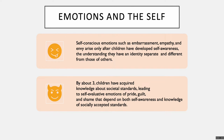Different emotions develop as the child grows in knowledge and becomes self-aware. Self-conscious emotions — such as embarrassment, empathy, and envy — depend on self-awareness, which is the realization that one's existence and functioning are separate from those of other people and things. Self-evaluative emotions such as pride, shame, and guilt depend on both self-awareness and knowledge of socially accepted standards of behavior. Self-conscious emotions such as embarrassment, empathy, and envy arise only after children develop the understanding that they have an identity separate and different from others.